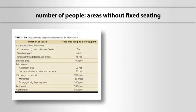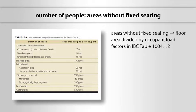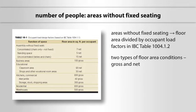The design occupant load in areas without fixed seating is calculated by taking the floor area and dividing it by the occupant load factors in IBC table 1004.1.2. A sampling of this table is shown in this image. The table has two different types of floor area conditions, gross and net.